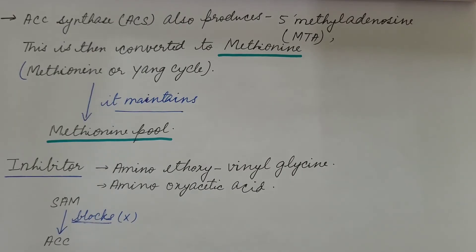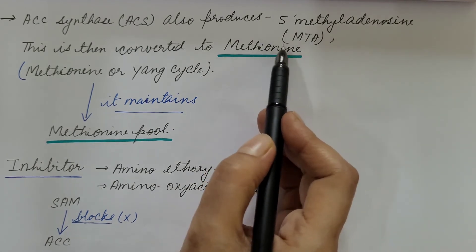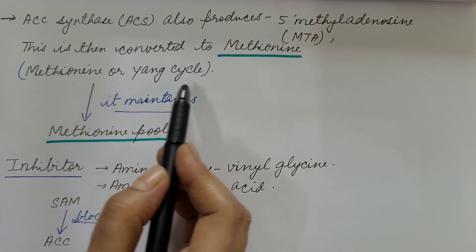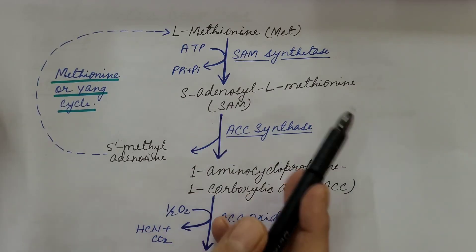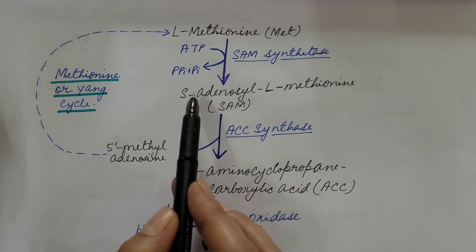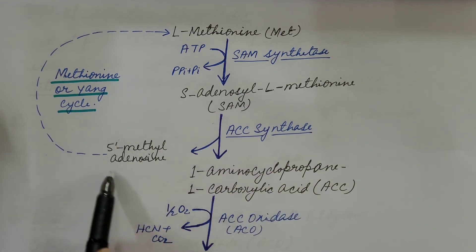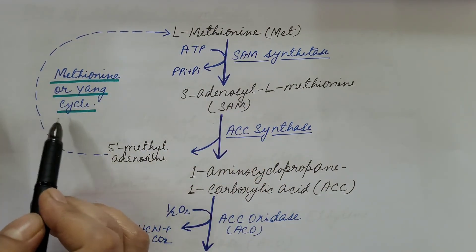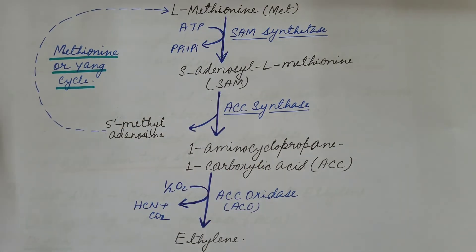In the second step, ACC synthase also produces 5-methylthioadenosine (MTA) from S-adenosyl L-methionine. This 5-methylthioadenosine is then converted back into L-methionine by the methionine or Yang cycle, which maintains the methionine pool. In this way the pathway continues without requiring methionine from outside.